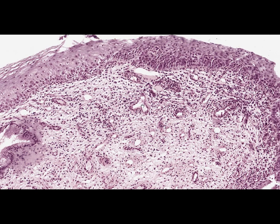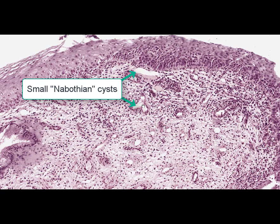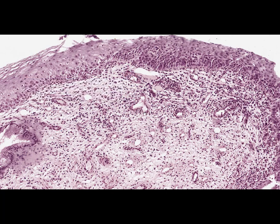Nabothian cysts occur due to stratified squamous epithelium growing over and covering the excretory ducts of glands, obstructing the ducts and preventing free excretion. The secretion accumulates in the glands, which expand and turn into small cysts. Generally, the metaplasia is considered a precancerous lesion, and if etiological factors — for example human papillomavirus — remain acting and no treatment is taken, the metaplasia can turn into dysplasia, meaning cervical intraepithelial neoplasia (CIN), and then into cervical cancer, mainly adenocarcinoma.